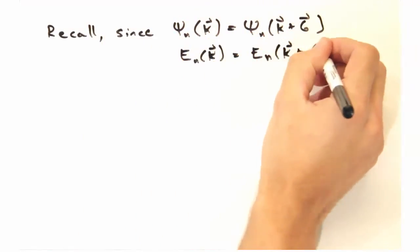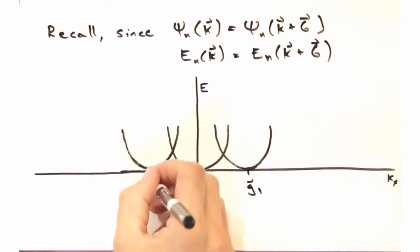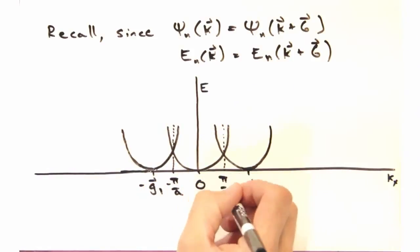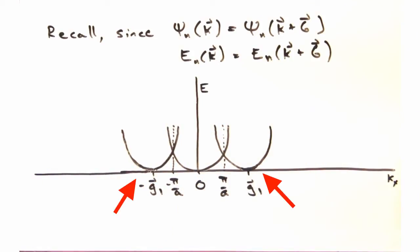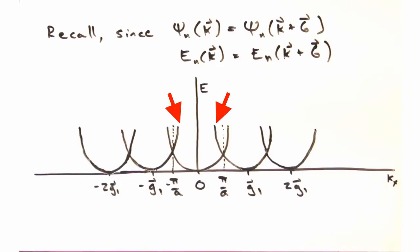As a starting point, just recall the 1D dispersion in the periodic zone scheme. We'll find parabolas with origins at plus and minus 1G that also extend into the first Brillouin zone. And we also find these parabolas at plus and minus 2G1 and so on and so on.